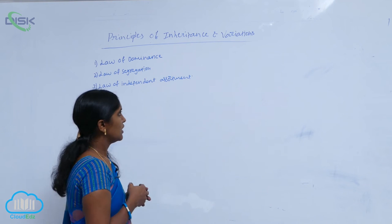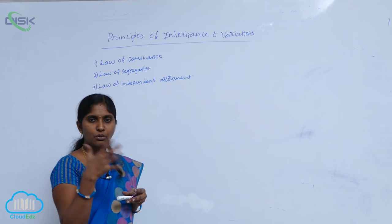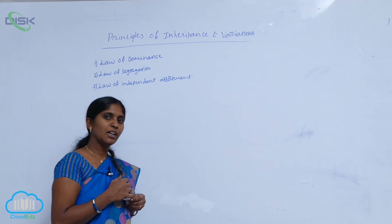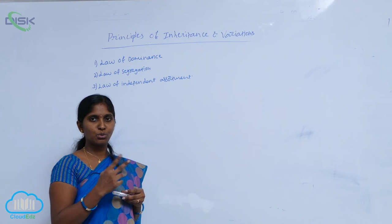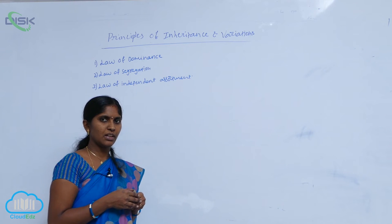You see in monohybrid cross, the characters are presented in the heterozygous, that is capital T, small t. The tall character and small character both are contrast characters. One is dominant character, another one is recessive character.